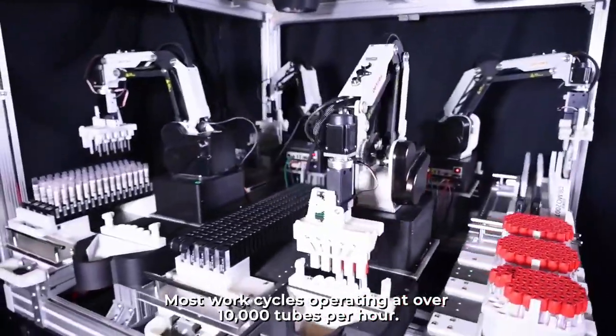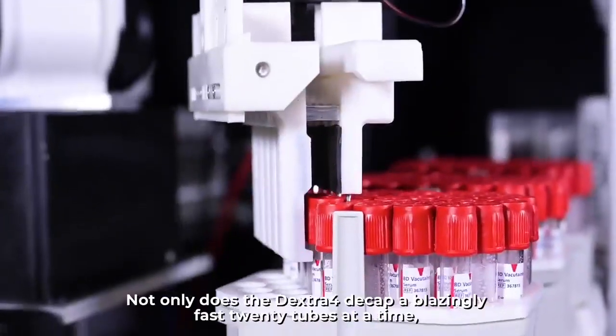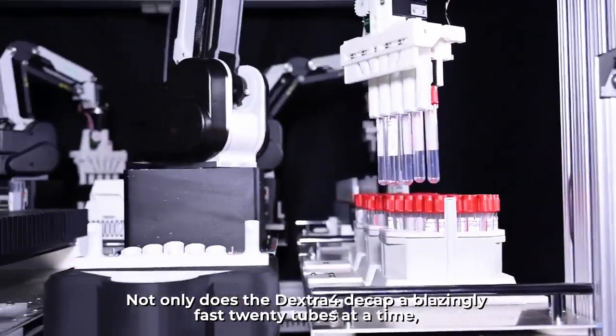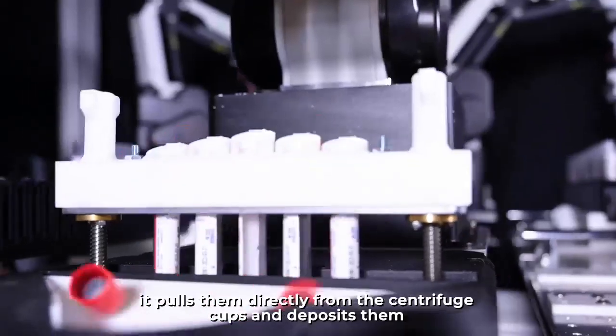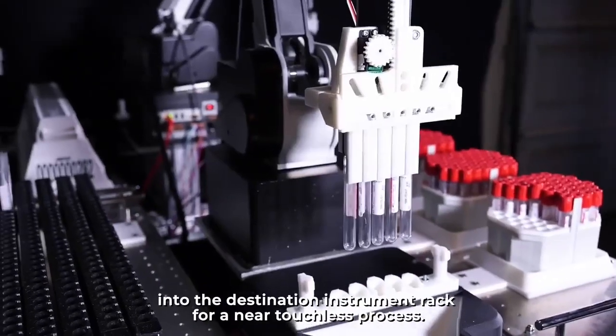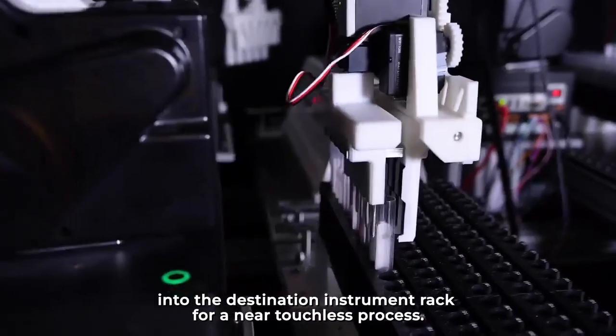Most work cycles operate at over 10,000 tubes per hour. Not only does the Dextra decap at a blazingly fast 20 tubes at a time, it pulls them directly from the centrifuge cups and deposits them into the destination instrument rack for a near-touchless process.